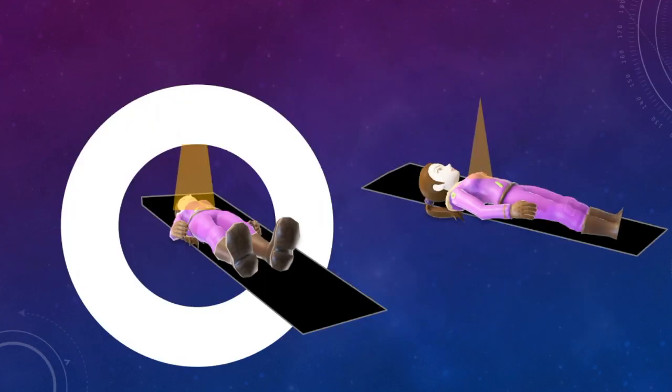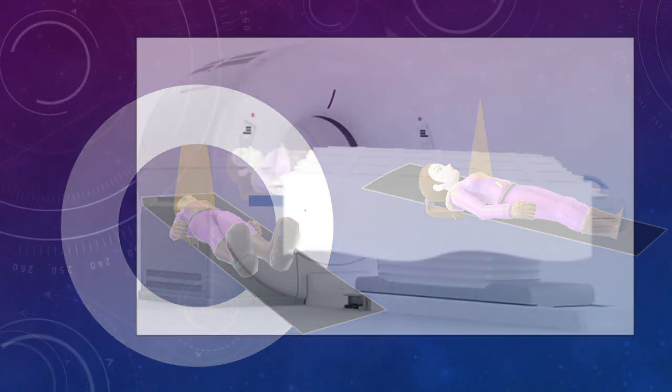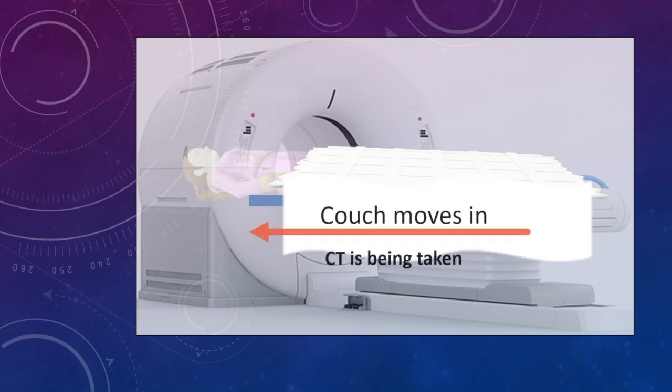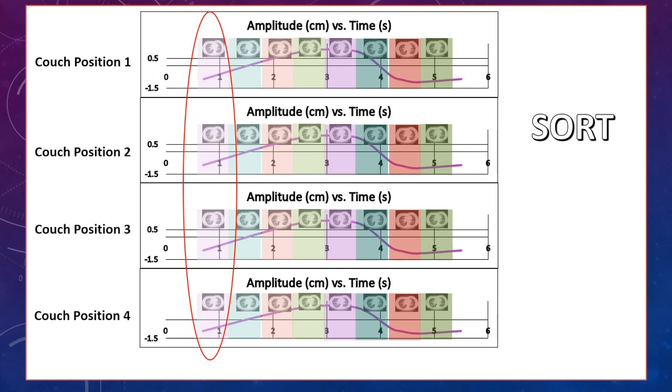Remember, every time we take a CT, we are imaging only a small portion of her body, a few slices. In order to image a longer section, we have to CT Starbucks over a range of couch positions and then combine the CT images to obtain a larger volume. At each couch position, CT images are obtained over a longer breathing cycle as already demonstrated.